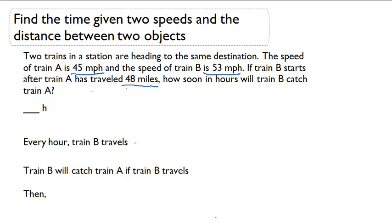So for every hour, train B is going to travel 53 minus 45, or 8 miles more than train A.